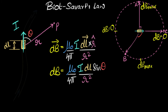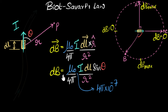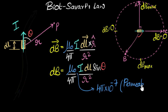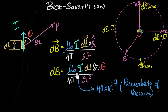What is this μ₀? It's a constant for vacuum, and most of the time we'll be dealing with vacuum. Its value is 4π × 10⁻⁷, and it's given the name permeability of vacuum. If that sounds familiar, we earlier had permittivity — this is permeability. The value of the whole constant μ₀/(4π) is simply 10⁻⁷, because the four pi cancels out.